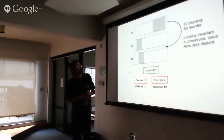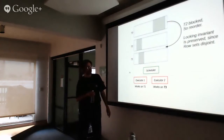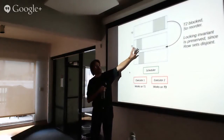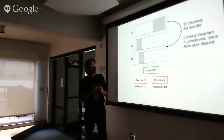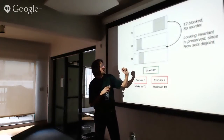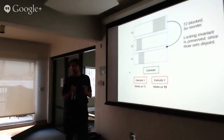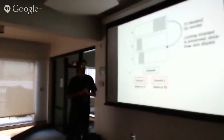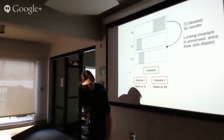A slightly more interesting example: T2 is blocked on T1 because they both try to lock the same rows. But T3 is independent of those two, so we can reorder it — move T3 ahead of T2 — without breaking the lock manager invariant. This is why row-level locking is so important: the lock manager only says that locks must be ordered per row, so since T3's locks don't touch the same rows as T2's locks, we can do a little reordering to get more concurrency.